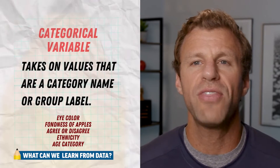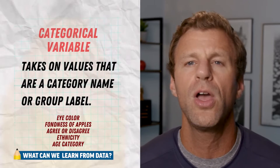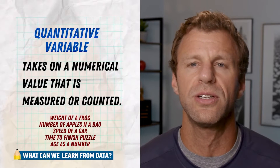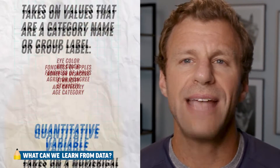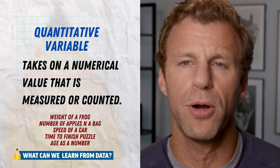There are only two types of variables. All variables in the world can be categorized into two types: either categorical variables or quantitative variables. A categorical variable takes on values that are category names or group labels, like eye color or hair color. A quantitative variable takes on numerical values that are either measured or counted, like the weight of a frog or how many candies are in a bag. To keep it really simple: a categorical variable value is going to be a word, whereas a quantitative variable value is typically going to be a number. There are a couple of exceptions — zip code is a number, but it's not measured and it's not counted, so it's technically a categorical variable. But in most cases, it's pretty straightforward: categorical variables are words, quantitative variables are numbers.